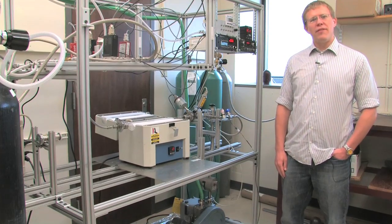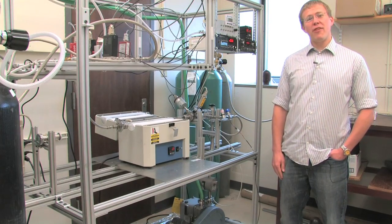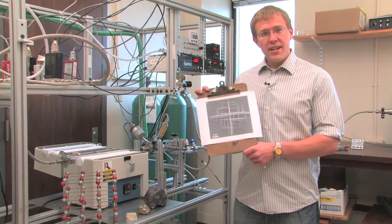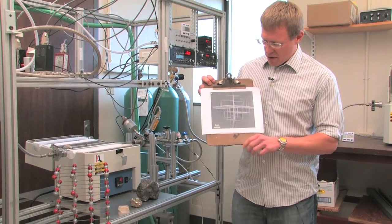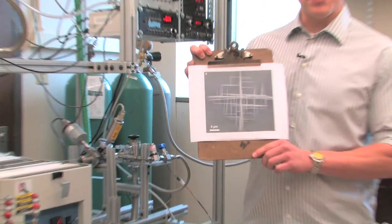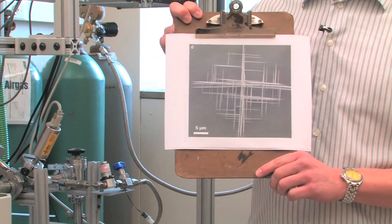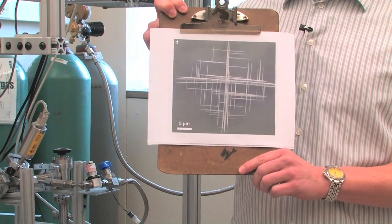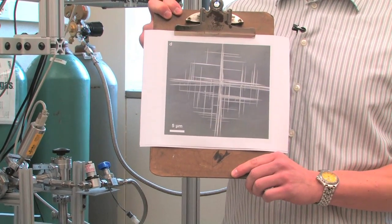Here is the chemical vapor deposition system where we grow many of our materials. Here is a crystal also of galena, except this one's made up of branching nanowires. Each one of these wires is 100 nanometers across, about a thousand times smaller than the width of human hair.